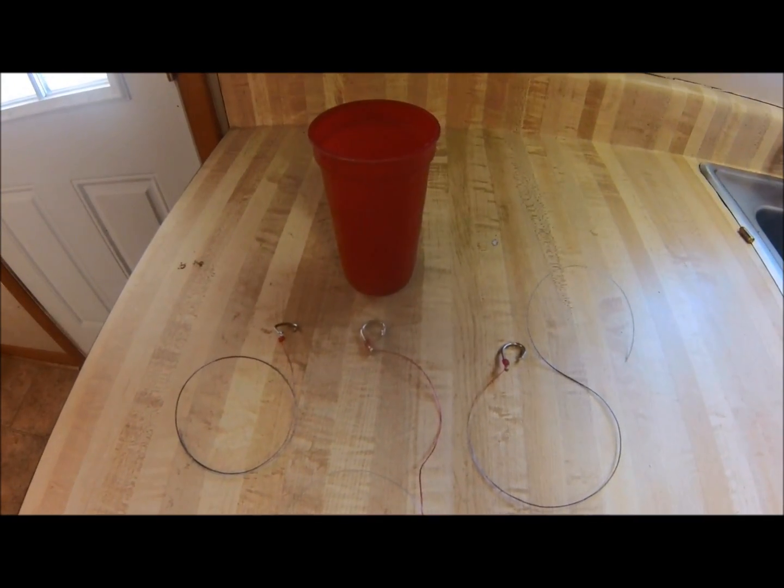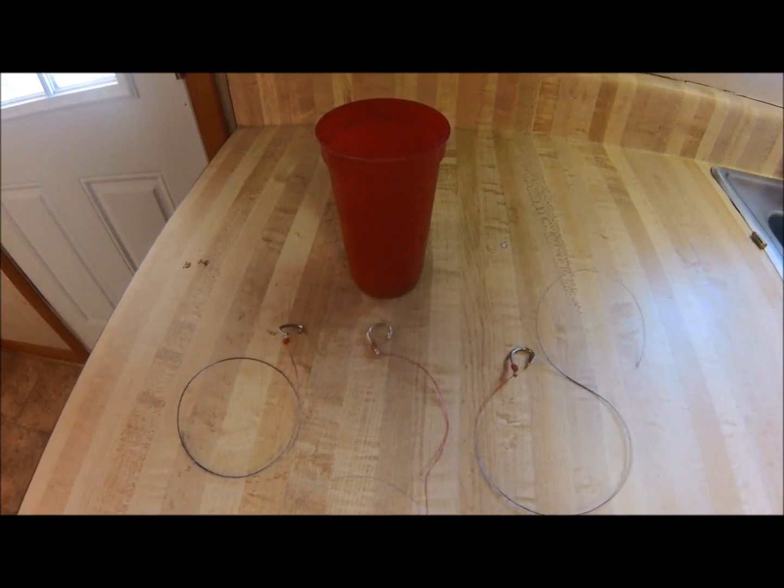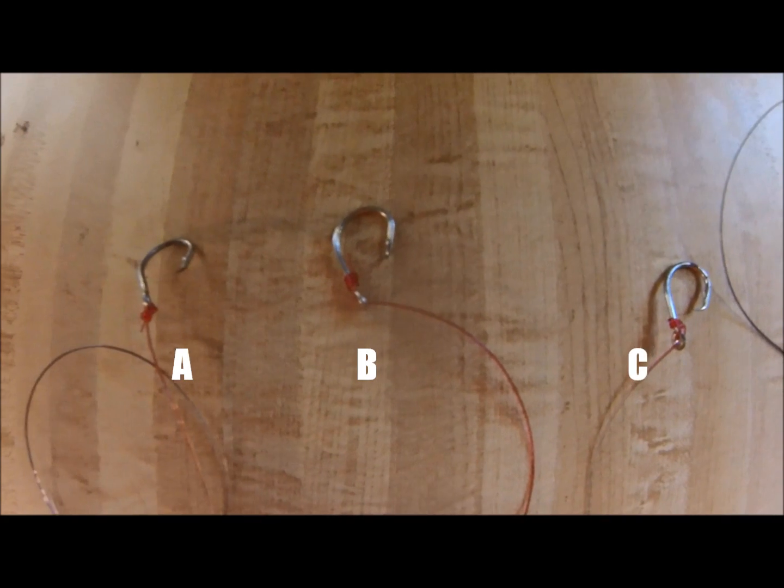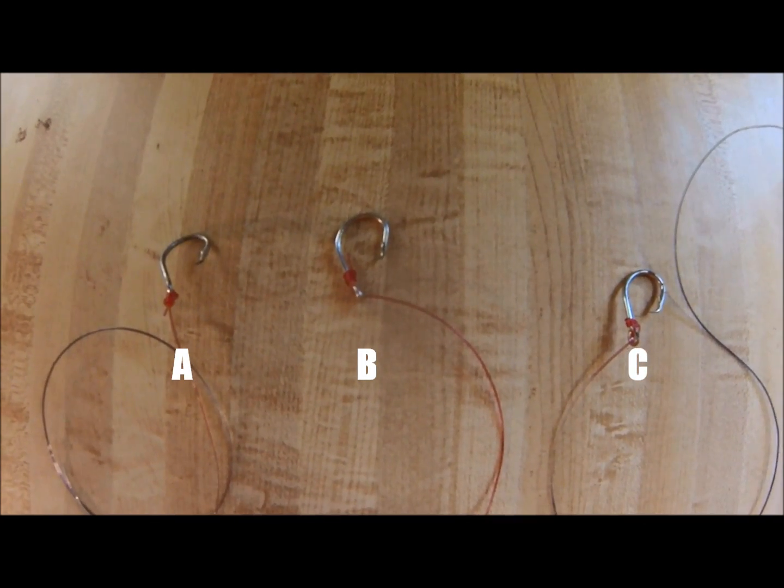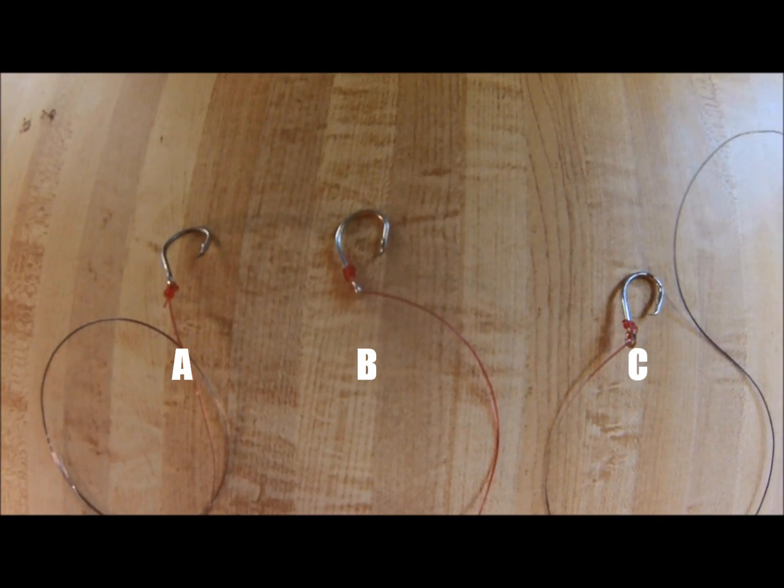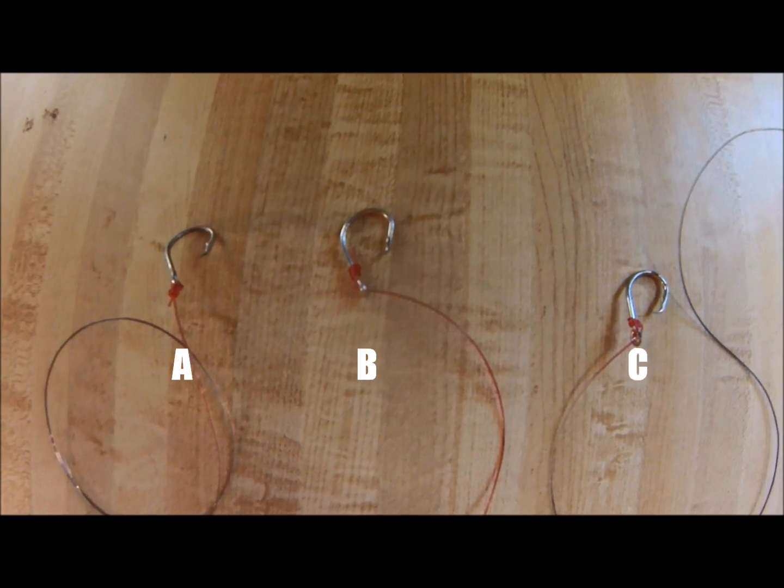I'm Cat Hunter and this is the three hook and a cup experiment. What you're looking at is three different circle hooks, all snelled up. Each one is snelled differently. Two of these hooks are snelled incorrectly and one of them are snelled correctly. Can you guess which one of these are snelled correctly?